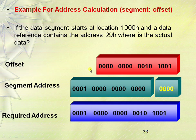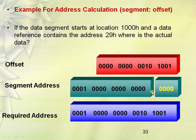For example, an offset value of 0029 (16-bit) and segment address of 1000 (16-bit): the segment address 1000 is shifted left by 4 bits to get 10000, then added with the offset 0029 to get the 20-bit physical address 10029. This address conversion is performed by the address conversion mechanism adder inside the Bus Interface Unit (BIU).